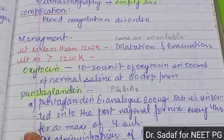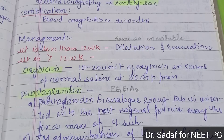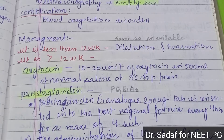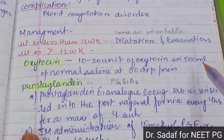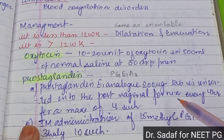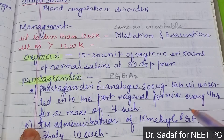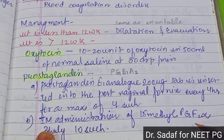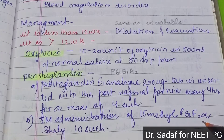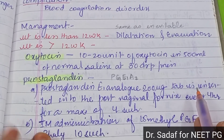For management, if the uterus is less than 12 weeks, we give oxytocin 10 to 20 units in 500 ml of normal saline at 10 to 30 drops per minute. Prostaglandin E1 analogue 200 microgram tablet is inserted into the posterior vaginal fornix every 4 hours for a maximum of 4 doses. Intramuscular administration of 15-methyl PGF2-alpha is also an option. This is the management of missed abortion.